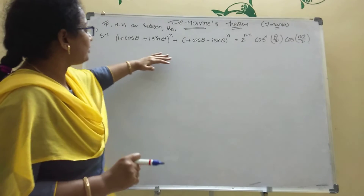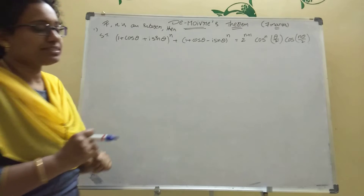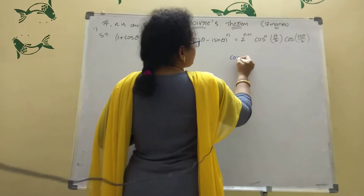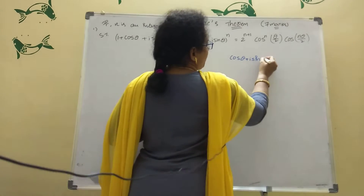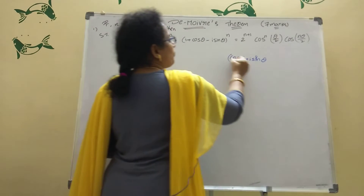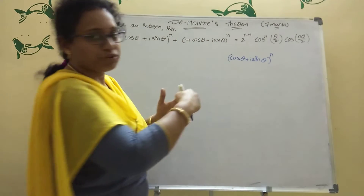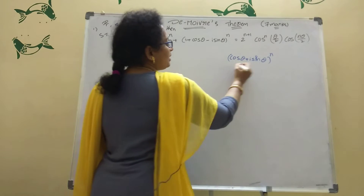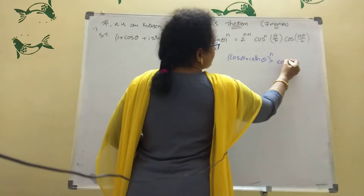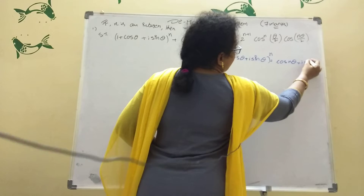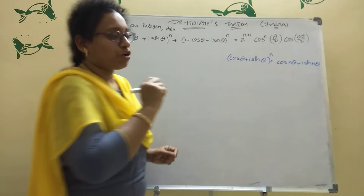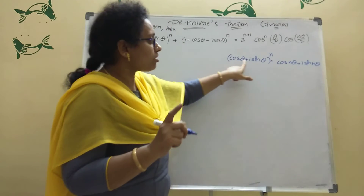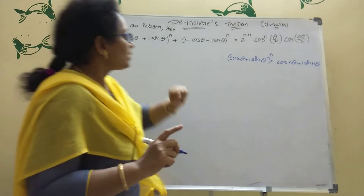In De Moivre's theorem, there are three formulas. The first formula: (cosθ + i·sinθ)^n — whatever power is there, it comes to the angle. So (cosθ + i·sinθ)^n = cos(nθ) + i·sin(nθ). That is the formula.